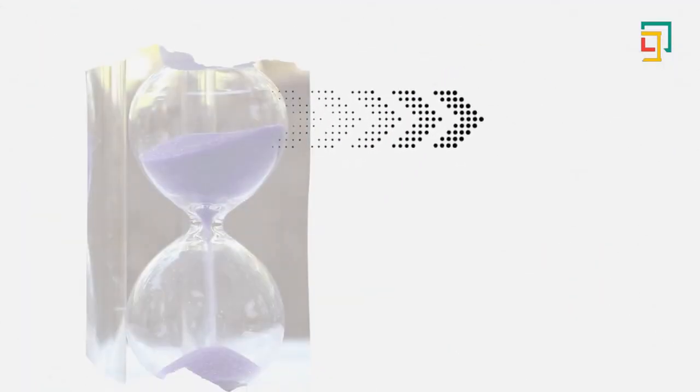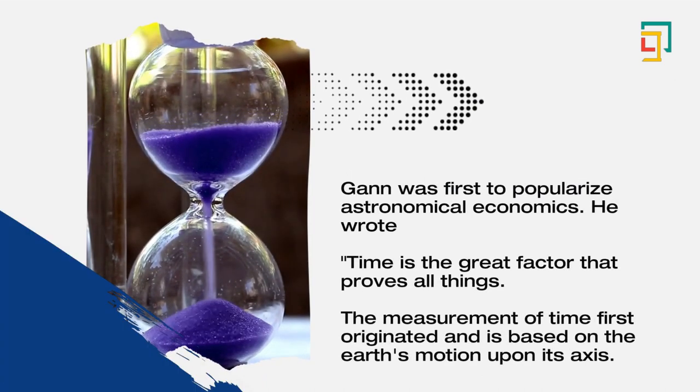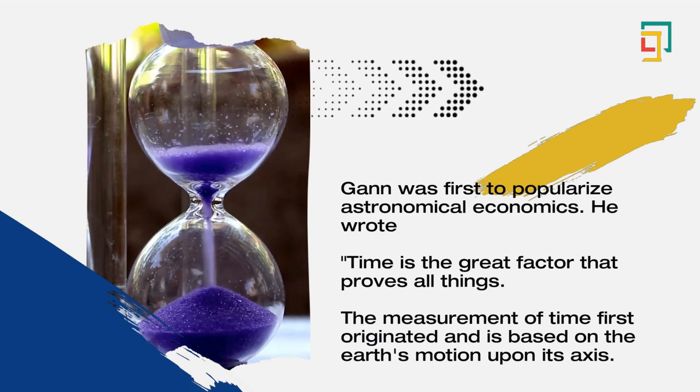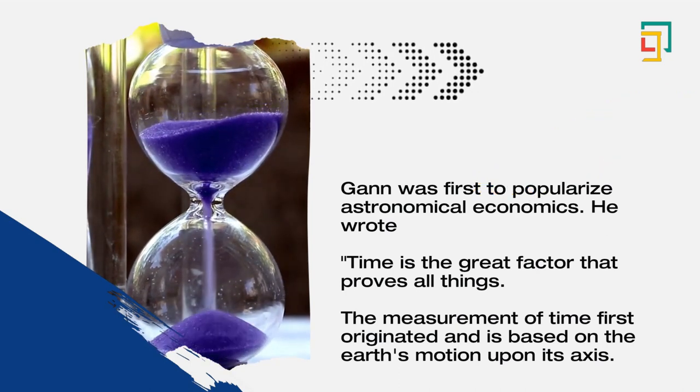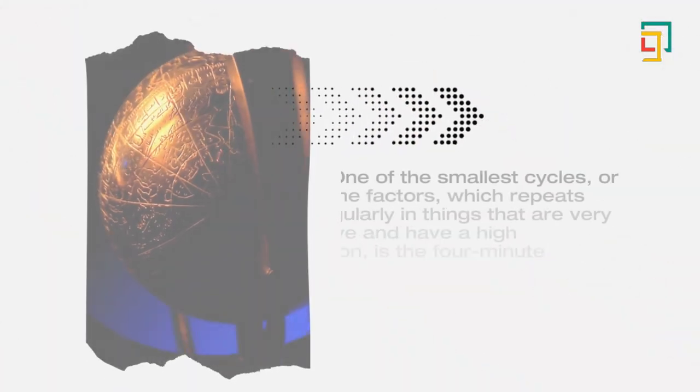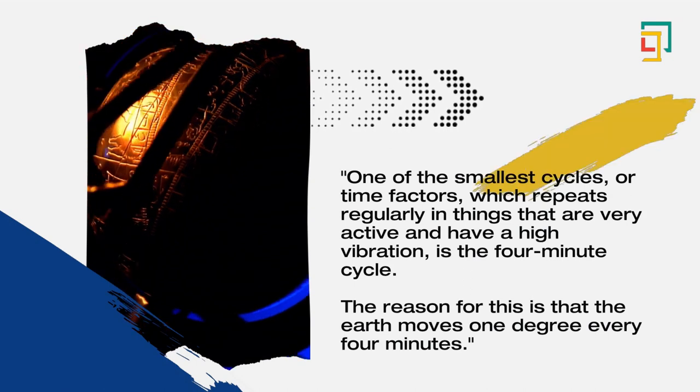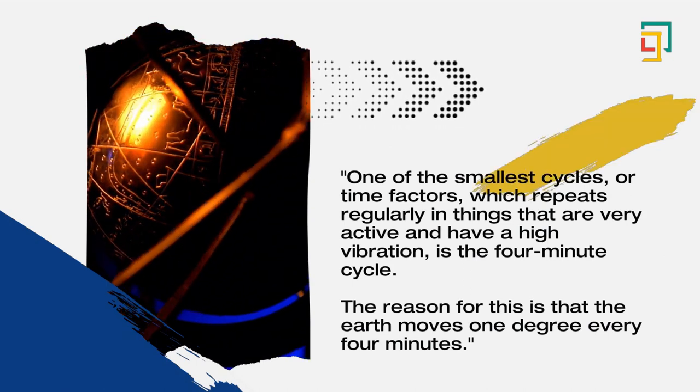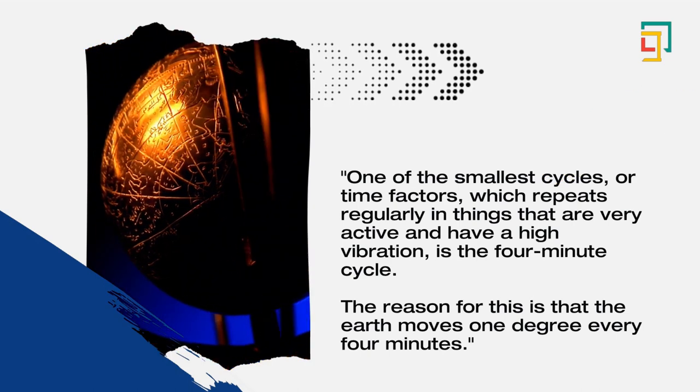Gann was first to popularize astronomical economics. He wrote: Time is the great factor that proves all things. The measurement of time first originated and is based on the Earth's motion upon its axis. One of the smallest cycles, or time factors, which repeats regularly in things that are very active and have a high vibration, is the 4-minute cycle. The reason for this is that the Earth moves 1 degree every 4 minutes.